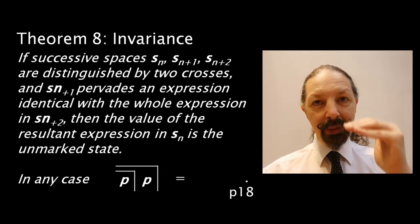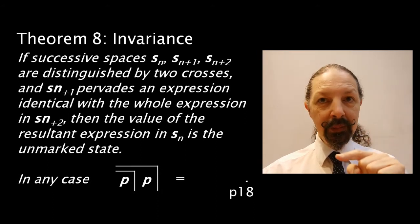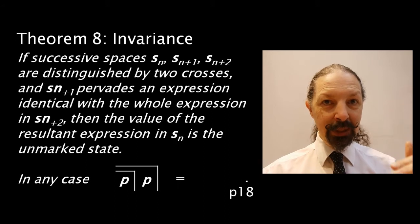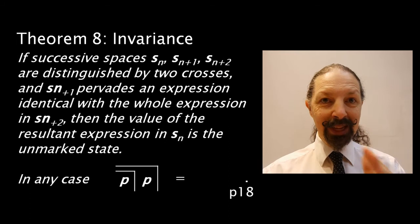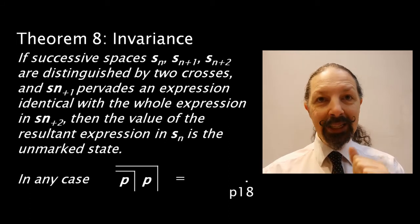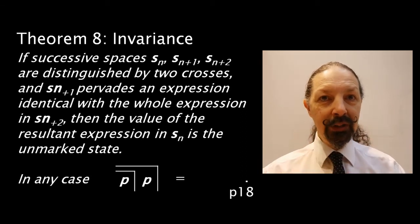Now, in Sn plus one, there is an expression p. That expression is also present in Sn plus two, the deepest space. Those two spaces contain the same expression. And in any case, if that happens, the whole expression can reduce to the unmarked state.